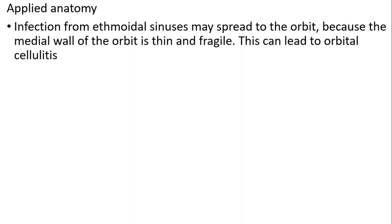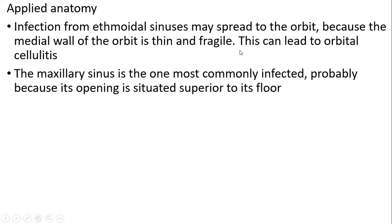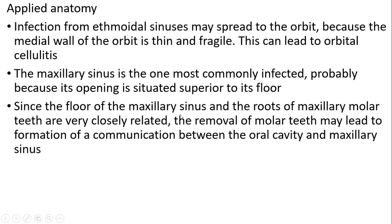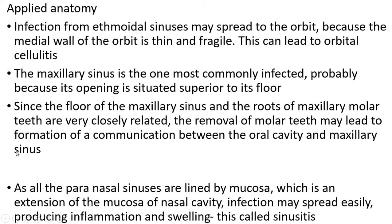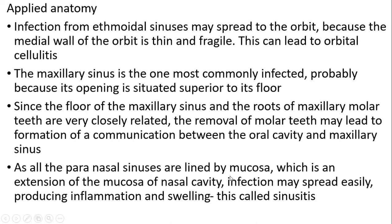Applied anatomy: infection of the ethmoid sinus may spread to the orbit because the medial wall of the orbit is thin and fragile, leading to cellulitis. The maxillary sinus is the most commonly infected, probably because its opening is superior to its floor. Since the floor of the maxillary sinus and the roots of the maxillary molar teeth are very closely related, removal of molar teeth may lead to formation of communication between the oral cavity and the maxillary sinus. Since paranasal sinuses are lined by mucosa which is an extension of the nasal cavity mucosa, infection may spread easily producing inflammation and swelling — this is called sinusitis.